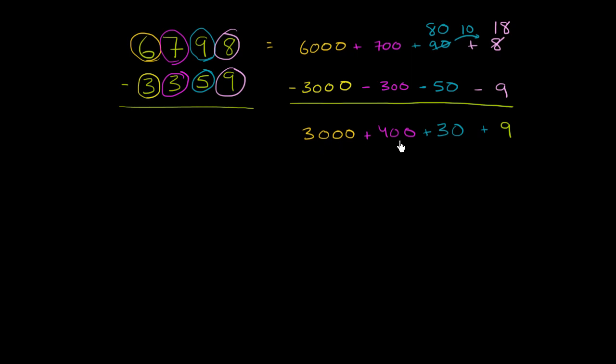So this is literally going to be 3,000 plus 400 plus 30 plus 9, or 3,439. Now how would you do it if you didn't want to write it out like this? And this is where you'll see kind of a shorthand notation. This is often called borrowing.